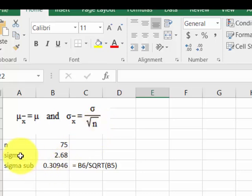So I put the data in this Excel, n of 75, the population standard deviation of 2.68, and I'm going to calculate the σ_x̄ for the sample. And we use this formula, B6, which is the sigma for the population, divided by the square root of n, 75. And that gives us a σ_x̄ of 0.30946.